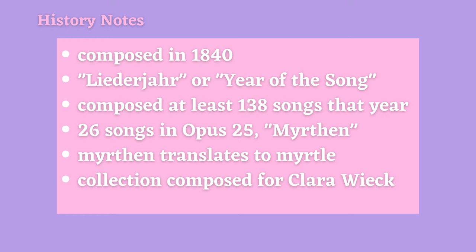Now 26 of those 138 songs he put together in a collection marked as Opus 25, also known as Myrten. The German word Myrten means myrtle in English, and myrtle is a flowering plant associated with, among other things, weddings and marriage. Schumann composed these 26 songs and presented this collection to his bride Clara Wieck as a wedding gift. Die Lotusblume is one of these 26 songs, and we'll see why it was included in this collection.